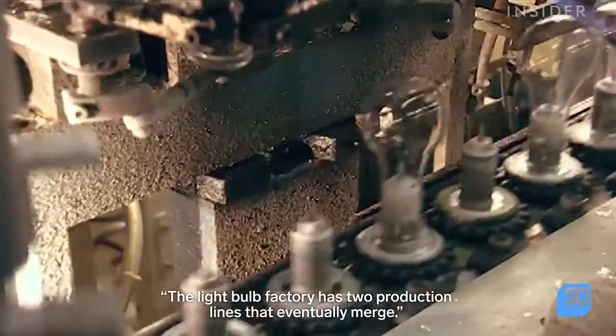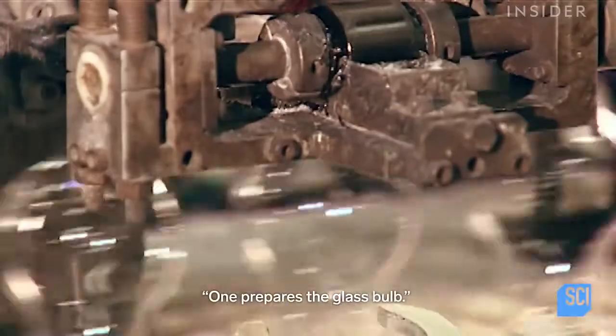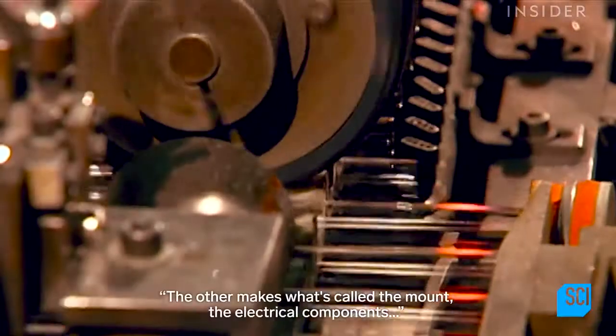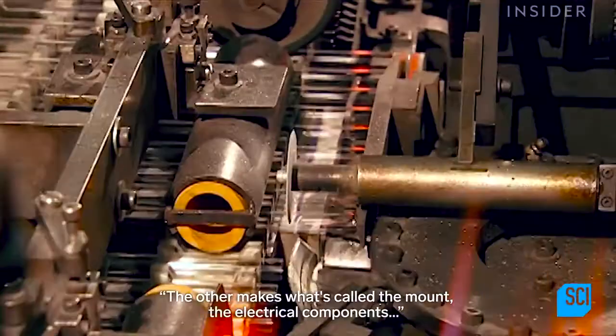The light bulb factory has two production lines that eventually merge. One prepares the glass bulb, the other makes what's called the mount, the electrical components that go inside it.